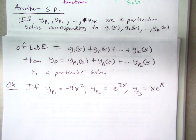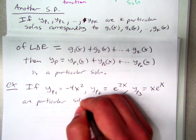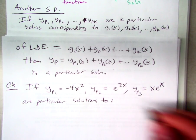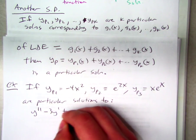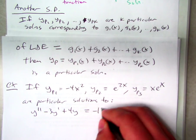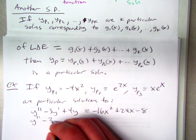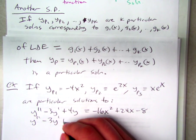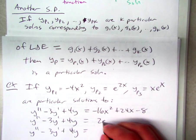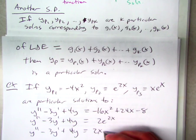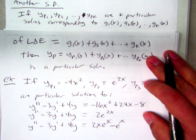Let's say these are particular solutions to three differential equations. Y double prime minus 3Y prime plus 4Y equals negative 16X squared plus 24X minus 8. And we have the same Diffie Q on the left with some other functions. 2E to the 2X, 2XE to the X minus E to the X.